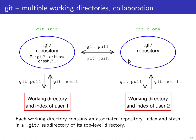So if you use, for example, git pull origin, git knows that you want to pull the latest changes from the repository that you originally cloned from.